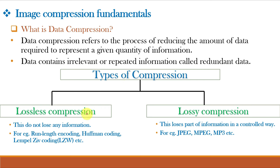There are two types of compression: lossless compression and lossy compression. Lossless compression techniques do not lose any significant aspect of the original representation. Lossy compression, on the other hand, loses part of the original in a controlled way. Examples of lossless compression include run-length encoding, Huffman coding, and LZW coding. Examples of lossy compression include JPEG for image compression, MPEG for video compression, and MP3 for audio compression.